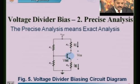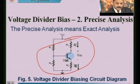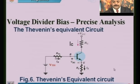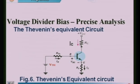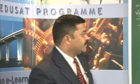In the exact analysis, beta is needed. If beta is not given in the problem, use approximate analysis. If beta is given, use precise analysis. Before going to precise analysis, we need to write the Thevenin's equivalent circuit. Thevenin's theorem may not be in first year, but just follow the method and you will get the equivalent circuit.